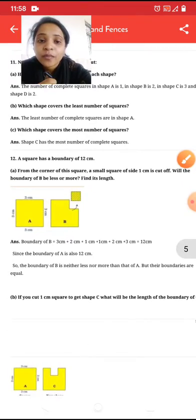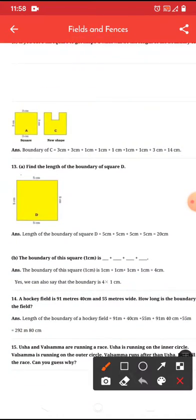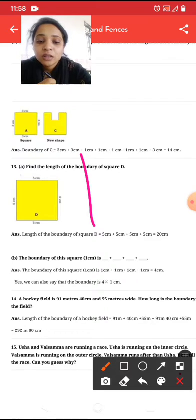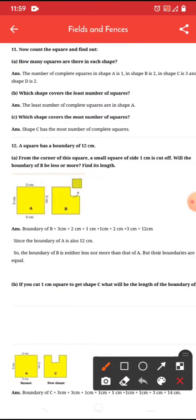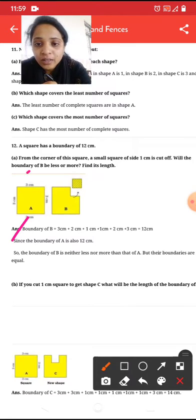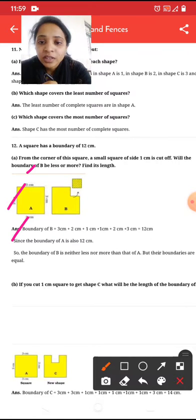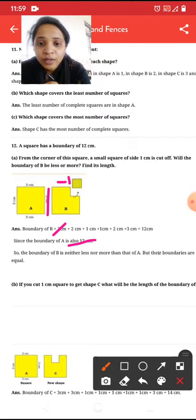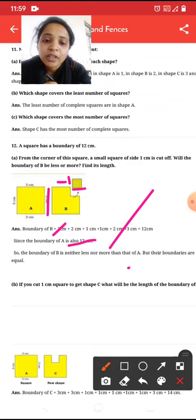So, let's start the answer. Here it's the answer. The boundary of B equals to 3 centimeter, 3 centimeter, 3 plus 3. That will be 12. Boundary of the A square is 12 centimeter. Now, let's find the boundary of B. So, what is the boundary of B? 3 centimeter plus 2 centimeter plus 1 centimeter plus 1 centimeter plus 2 centimeter plus 3 centimeter equals to 12.